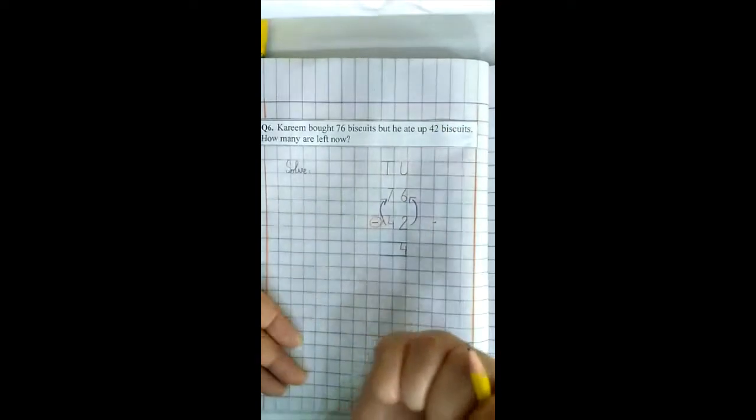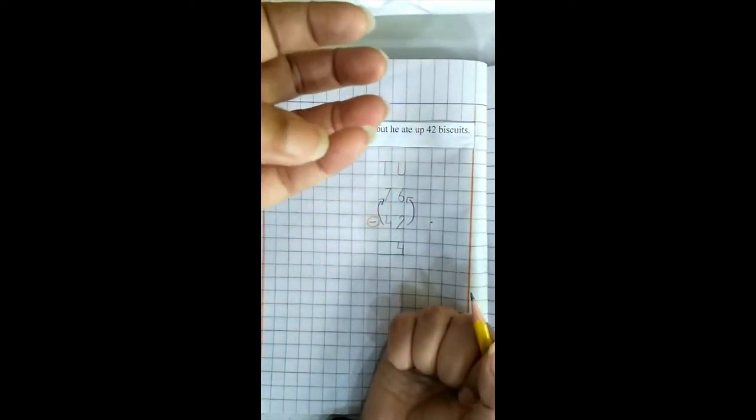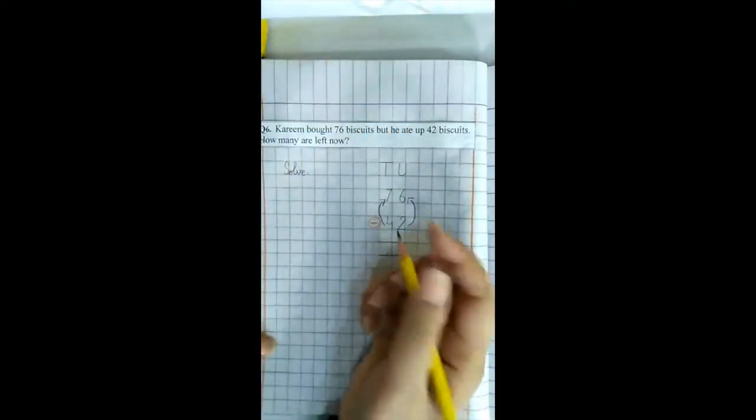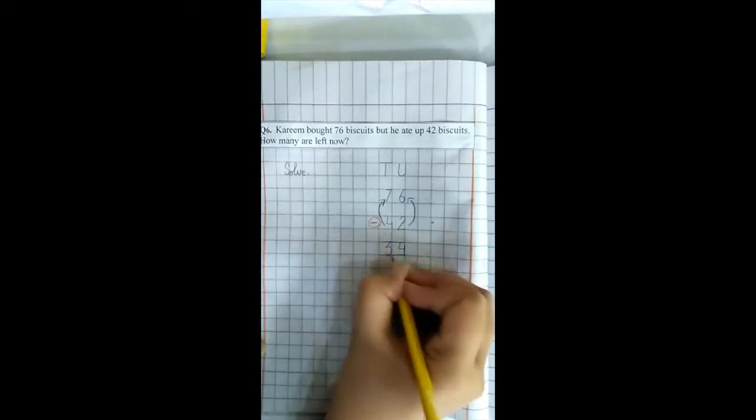Next. Four کو میں نے اپنے right hand میں catch کیا. Five, six, seven. کونسی position پہ ہمارا seven آیا؟ Three position پہ. What is the answer? Three. So answer is thirty-four.